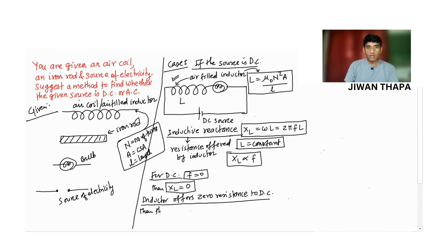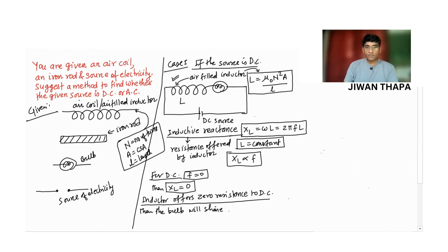If the inductor offers 0 resistance to DC, then the bulb will glow brightly. If a DC source is used, then the bulb shines brightly.